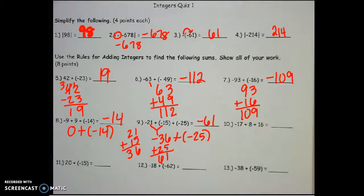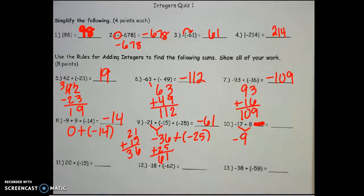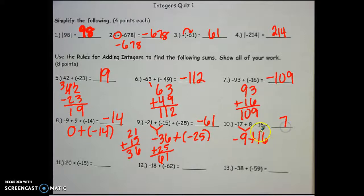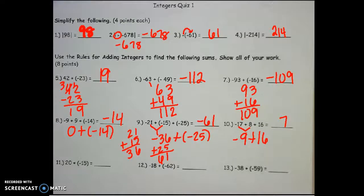For number 10, forget about what's at the end. I have different signs, so I subtract: 17 minus 8 is negative 9. Then add 16. Now my signs are different, so I subtract: 16 minus 9 is 7. The bigger number in this part is positive, so the answer is positive 7.